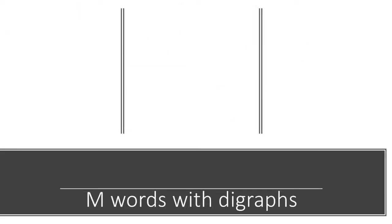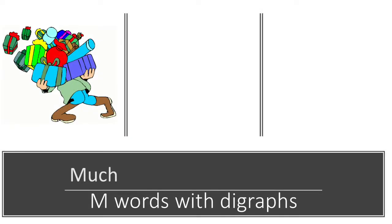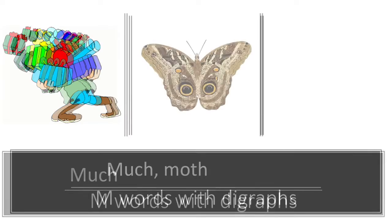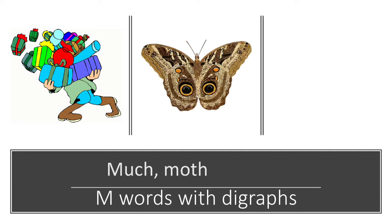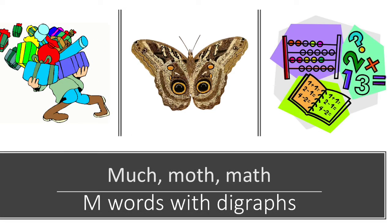Now we're going to look at letter M words that have digraphs at the end. Like "much" — M-A-CH, CH makes the CH sound at the end. Or "moth" — M-A-TH, TH makes the TH sound at the end. Like in "math" — M-A-TH, TH makes the TH sound at the end. For today, I want you to think of as many M words as you can and draw as many pictures as you can.